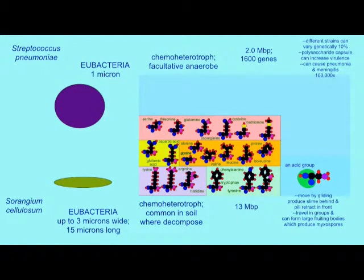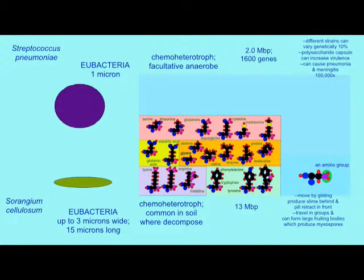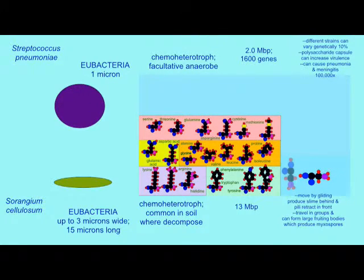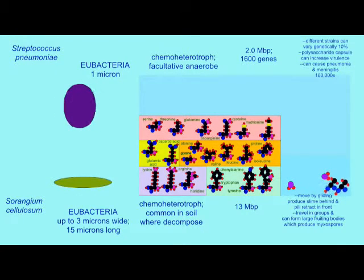E. coli is also a heterotroph. However, it does not exist as a symbiont — it's getting its carbon from its host because it acts as a parasite.